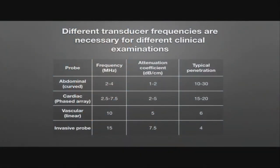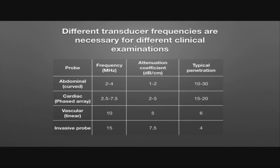The different transducers we mainly deal with include abdominal probes, typically operating at 2 to 4 MHz, with an attenuation coefficient of around 1 to 2 dB/cm and typical penetration of 10 to 30 cm. Next up the frequency ladder are the phased array or cardiac probes, operating at 2.5 to 7.5 MHz, with an attenuation coefficient of 2 to 5 dB/cm and typical penetration of 15 to 20 cm.